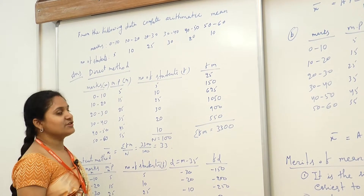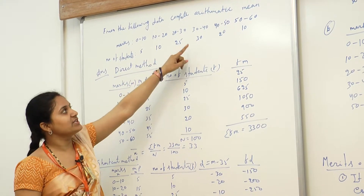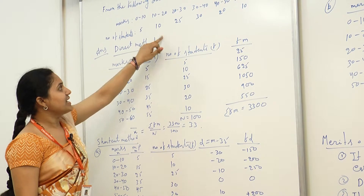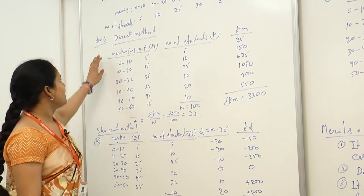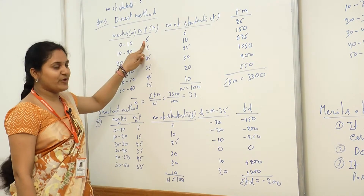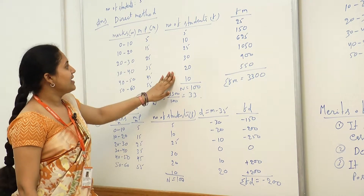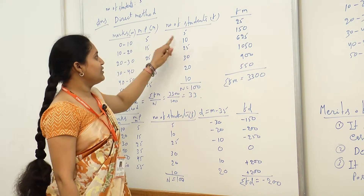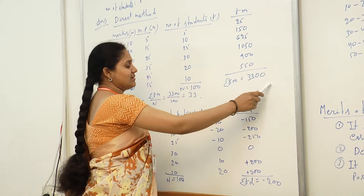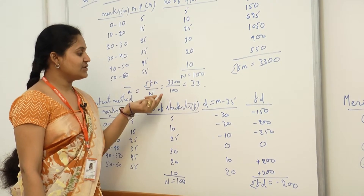Let's take an example for class intervals: compute the arithmetic mean for marks 0–10, 10–20, 20–30, 30–40, 40–50, 50–60 with frequencies 5, 10, 25, 30, 20, 10 respectively. The midpoints are 5, 15, 25, 35, 45, 55. Using the direct method, Σfm = 3300 and n = 100, so x̄ = 3300 / 100 = 33.